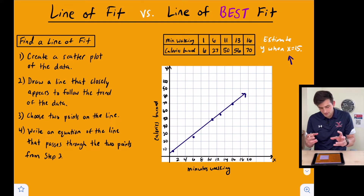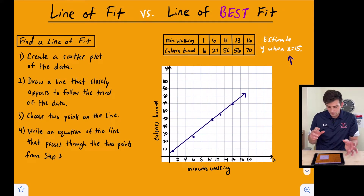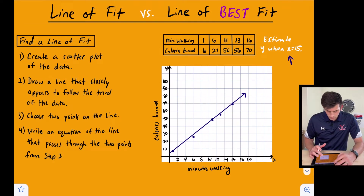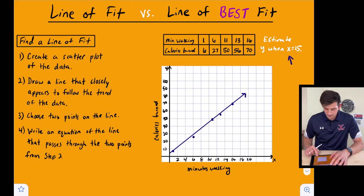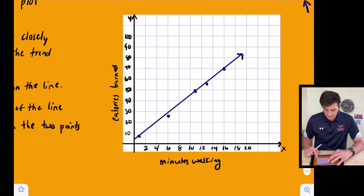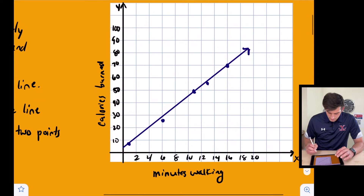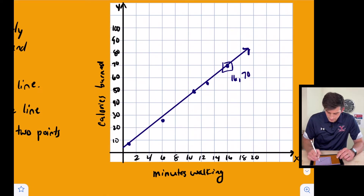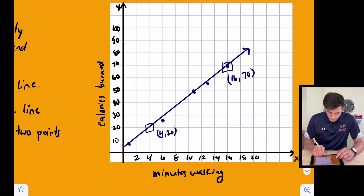We have two points below the line and three points that are kind of on our line. Now let's look at our graph and find a couple of points where the line crosses at a nice intersection. We've got this nice point right here — which is actually one of our data points, though it doesn't have to be — and possibly this point right here, which is (4, 20).